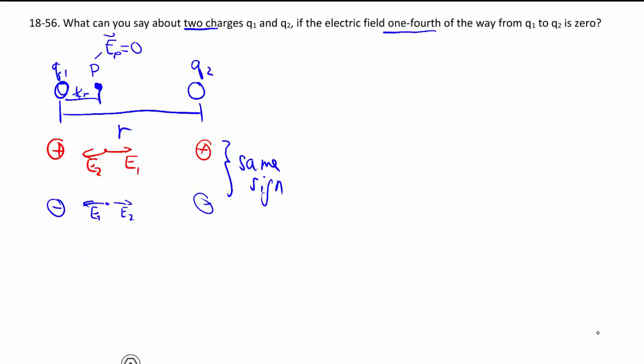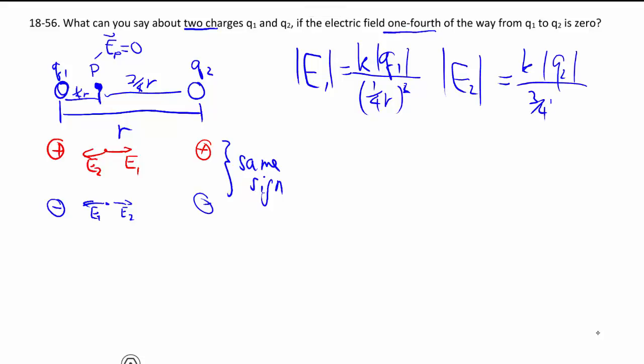So now that we have our direction established, let's go for our magnitude. Well to get the magnitude we would need all the r, so this is three quarters r because that's one quarter. And so e1 as a magnitude is equal to kq1, magnitude again one quarter r squared, and then e2 is kq2, three quarters r squared. You then sum up the electric field and we know that's equal to zero in this case because that's been given.